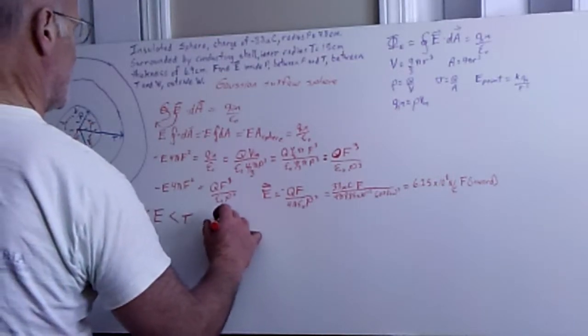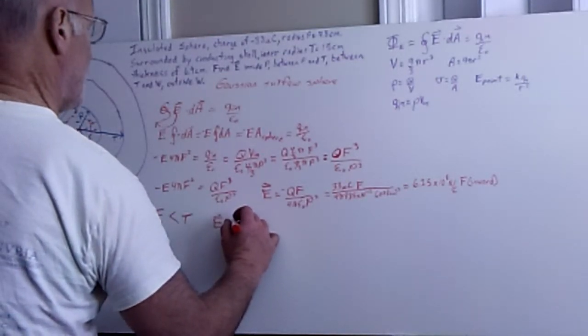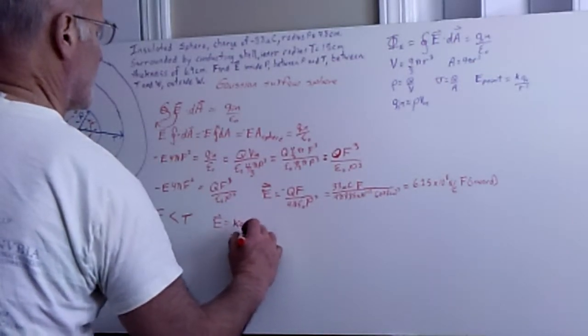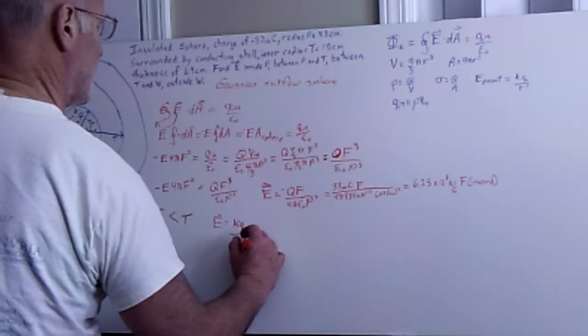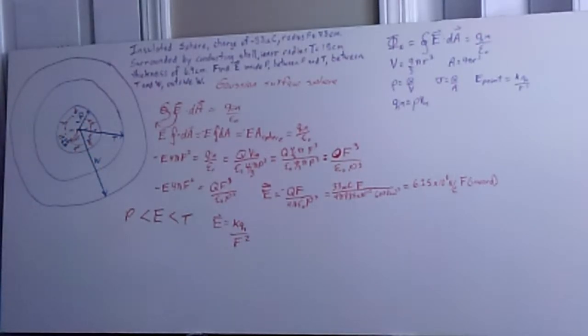Is going to be just given by E equals kQ over, in this case, rf squared, how far we are located outside of that inner insulated sphere.